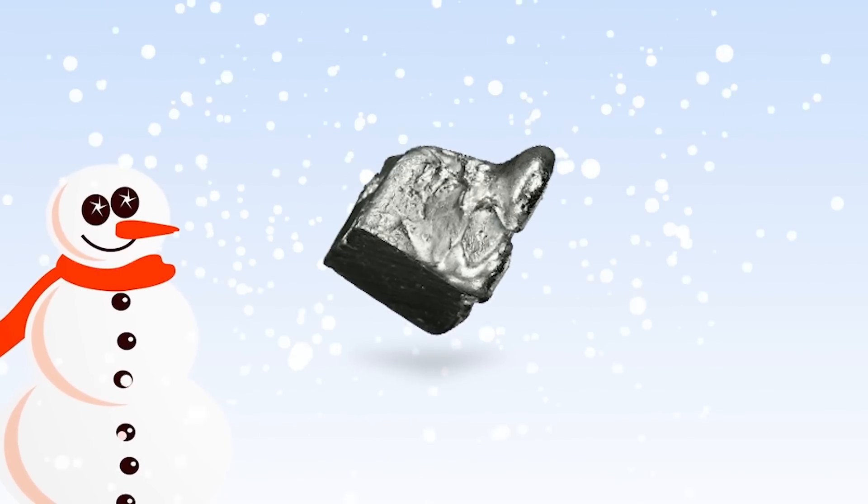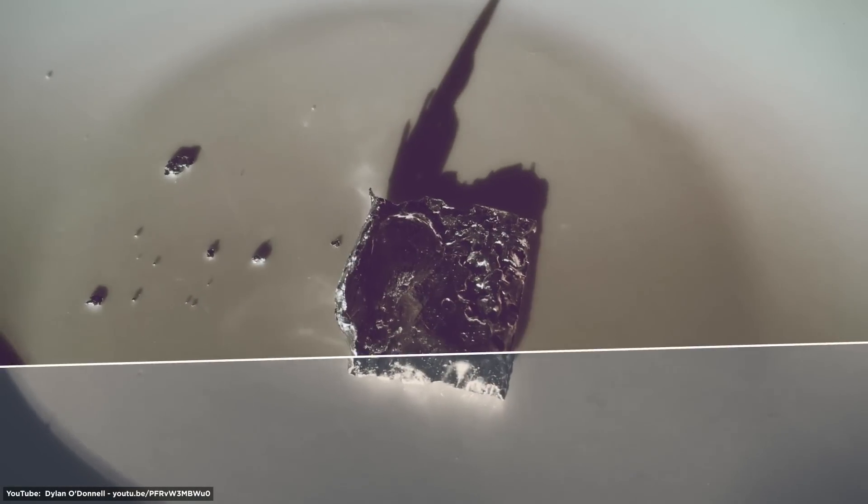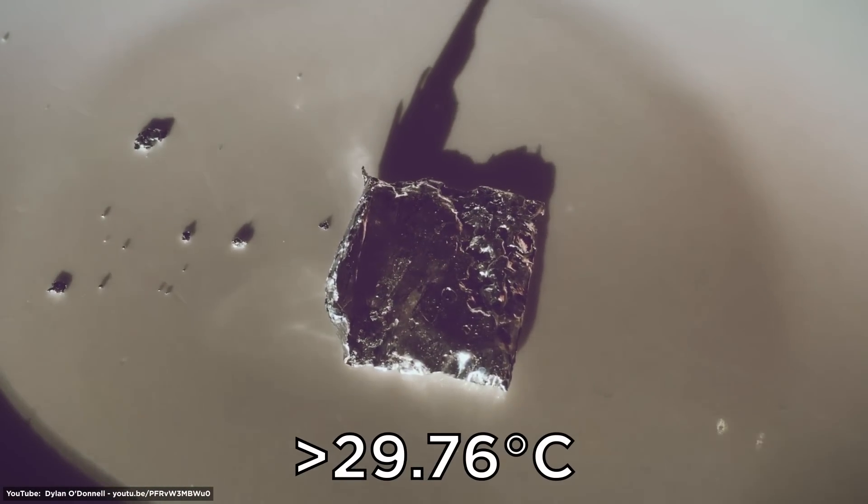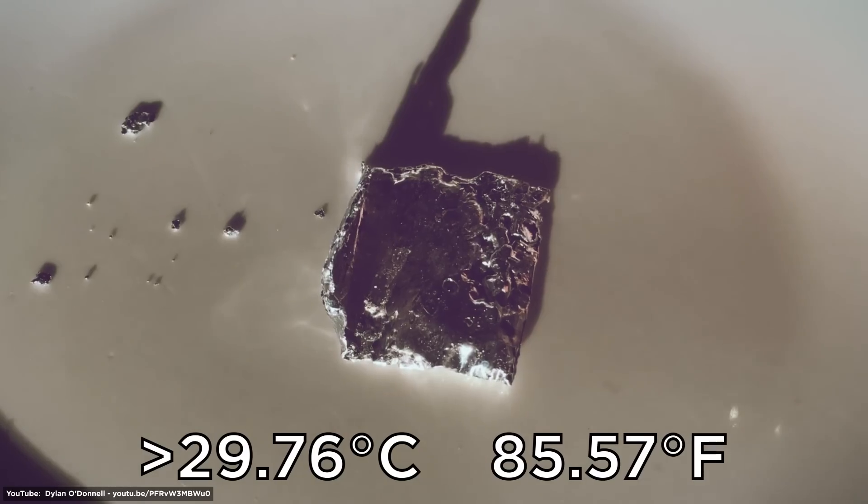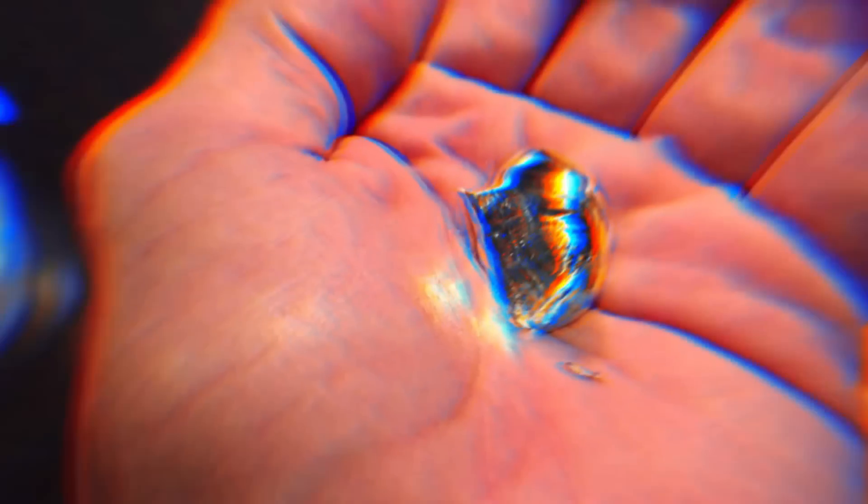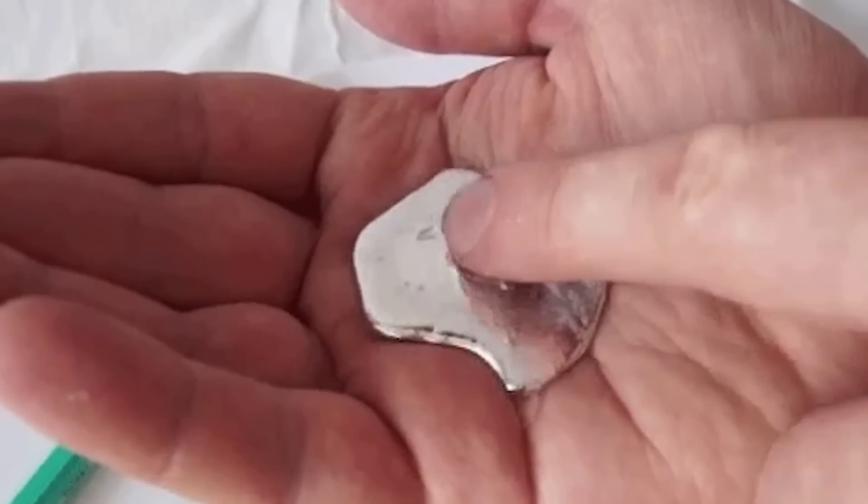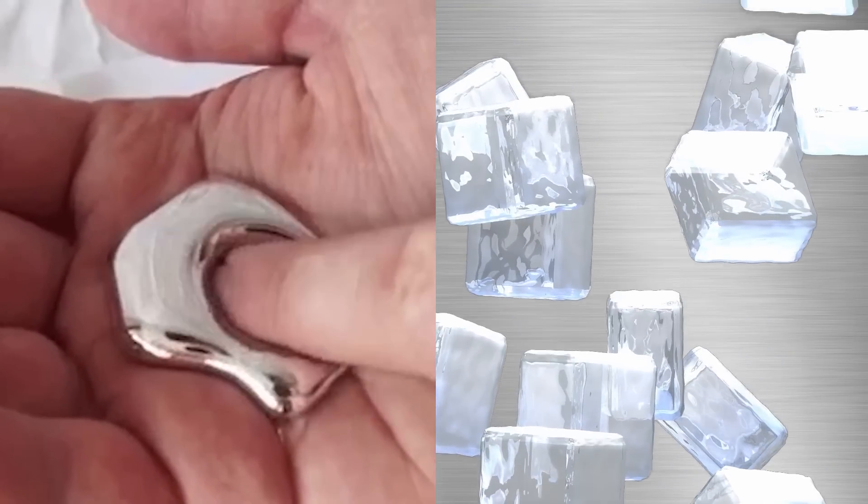At low temperatures, it's a hard, brittle metal, but at temperatures greater than 29.76 degrees Celsius, or 85.57 degrees Fahrenheit, it's a liquid. That means if you put it in your hands, it melts into a shiny puddle, sort of like metallic ice.